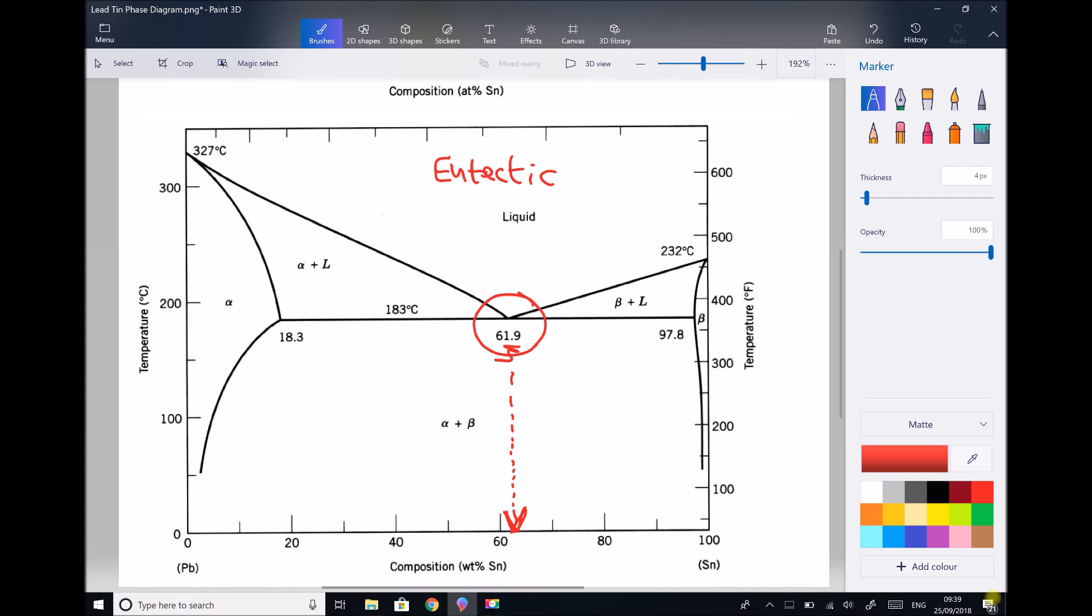Our eutectic temperature then tracking from the eutectic point left would give us the eutectic temperature. That's written on our diagram here as 183 degrees C. But what do we mean by eutectic? And what do we mean by eutectic compositions and eutectic temperatures? Well as we mentioned eutectic means easy melting.